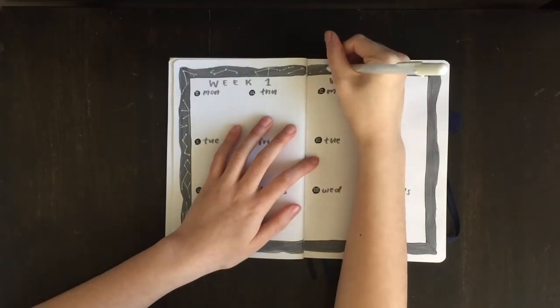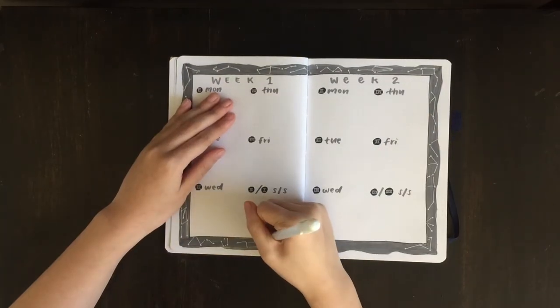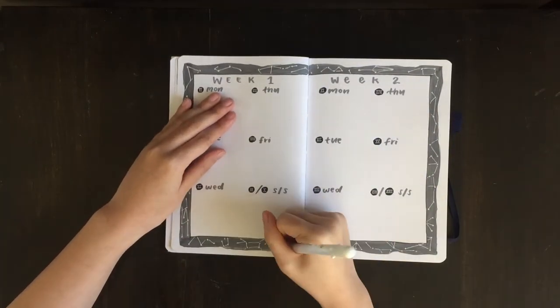At the edges of the map in the grey part, I'm using my white jelly roll pen to draw in some constellations just to add some spice to the page.